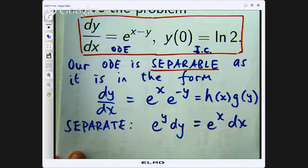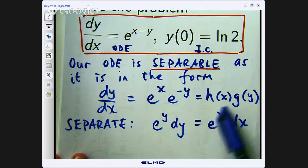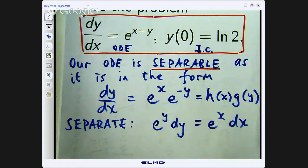So we have separated. We have got y's and dy's on this side and x's and dx's on this side just through division or multiplication.